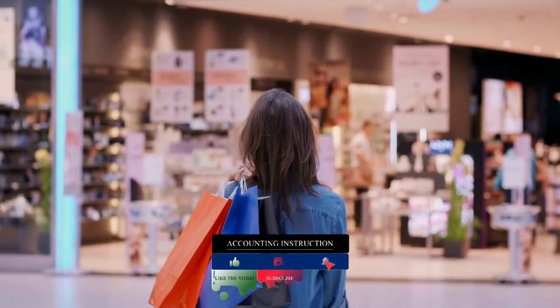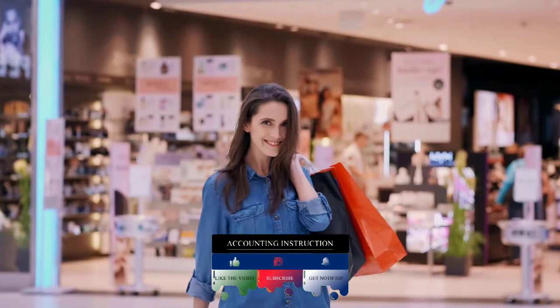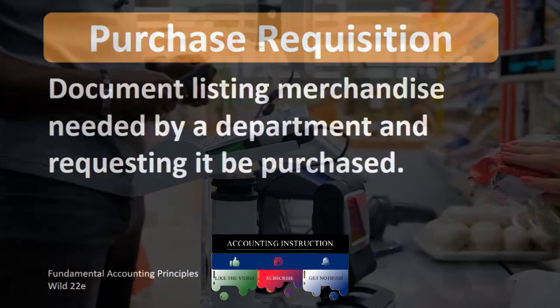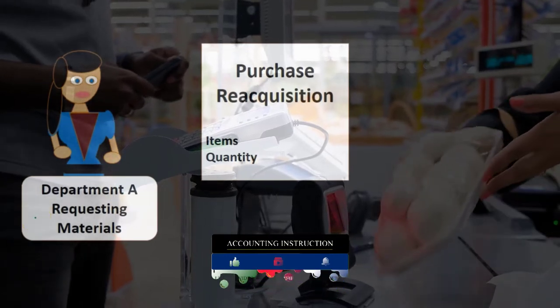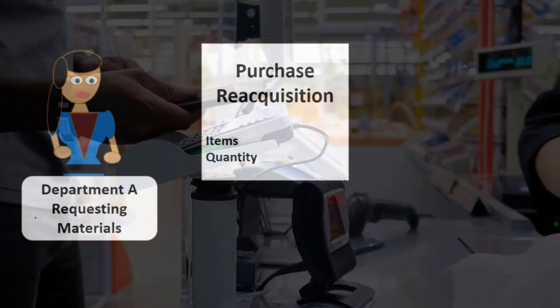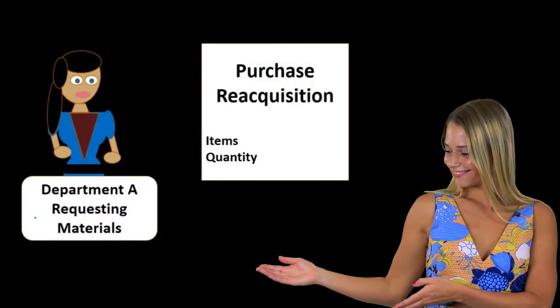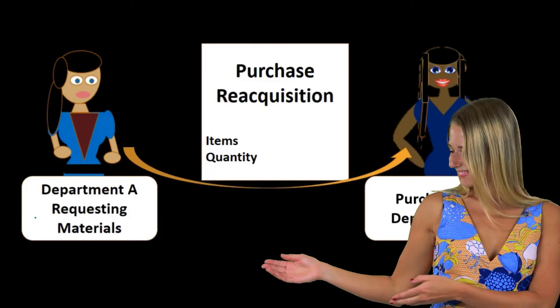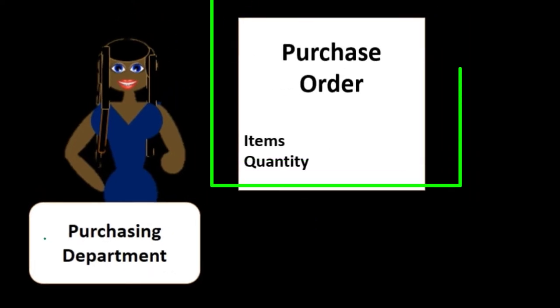The question is where does that take place in our purchasing process? That would be when one department sees that they need materials. They would have the purchase requisition, which lists the items and quantity, and that would then go to the purchasing department.